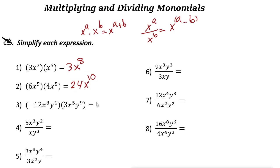Negative 12 times 3 is negative 36. X to the power of 8 times x to the power of 5 is x to the power of 13 — just add them up. And y to the power of 4 times y to the power of 9 is y to the power of 13, using the addition rule.